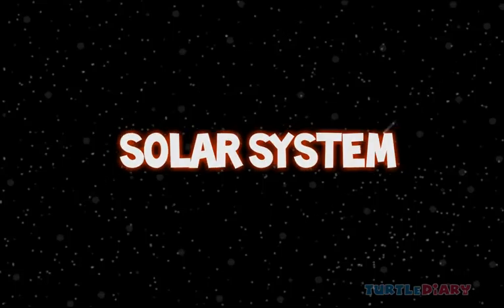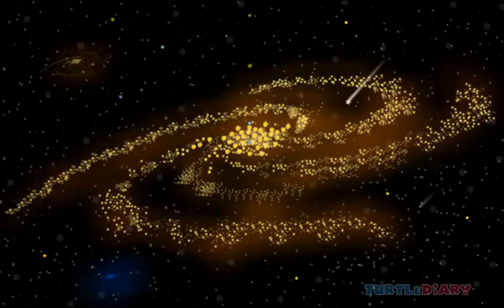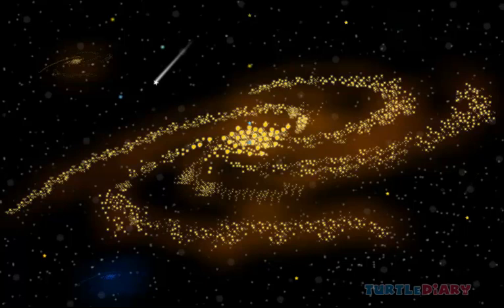The solar system is made up of one star, a handful of planets, more than a hundred moons, millions of rocky asteroids, and billions of comets.